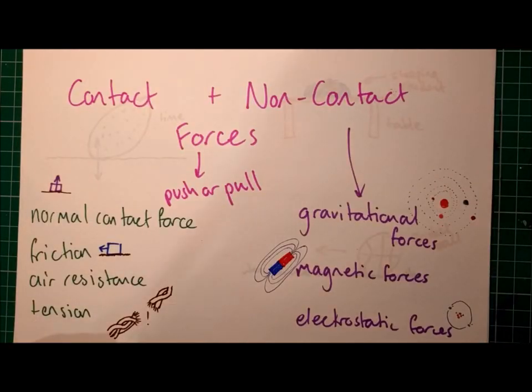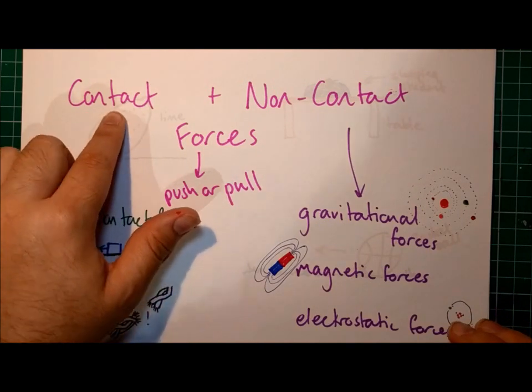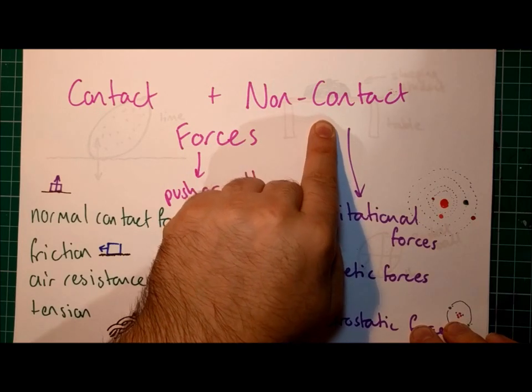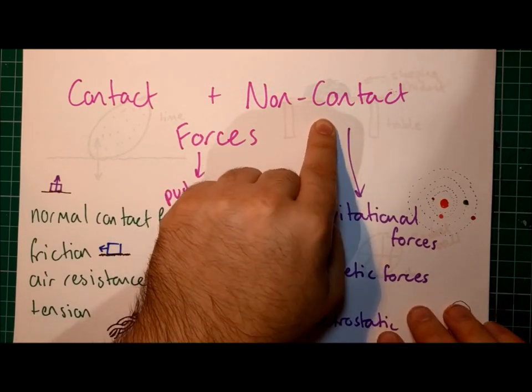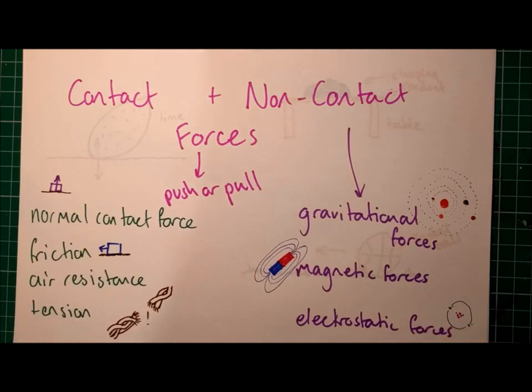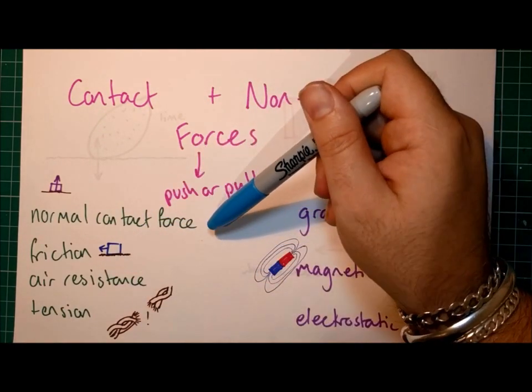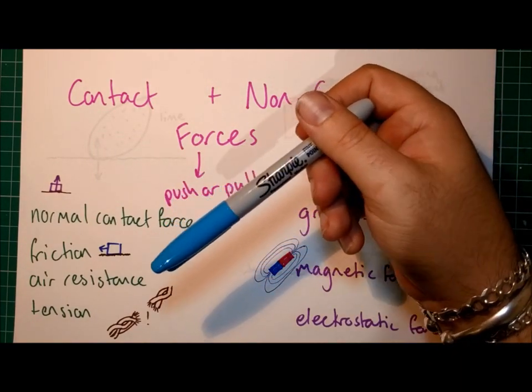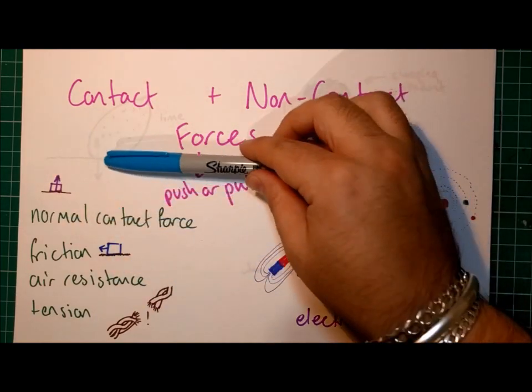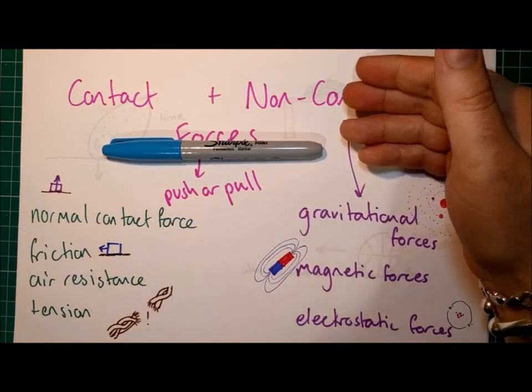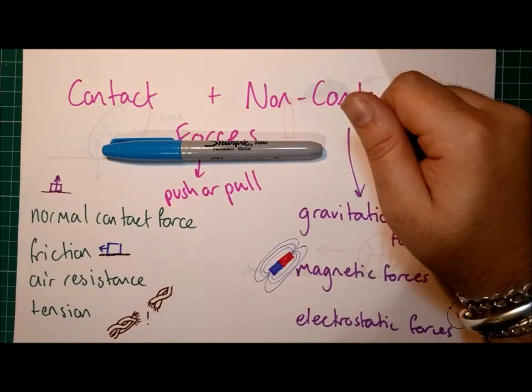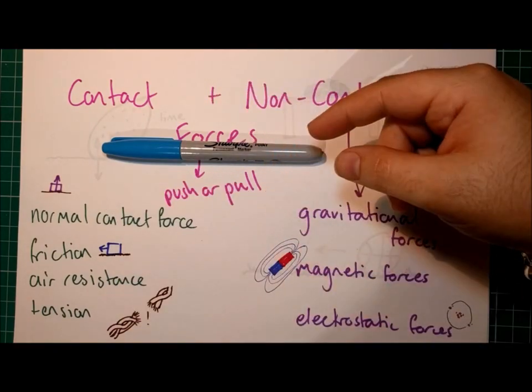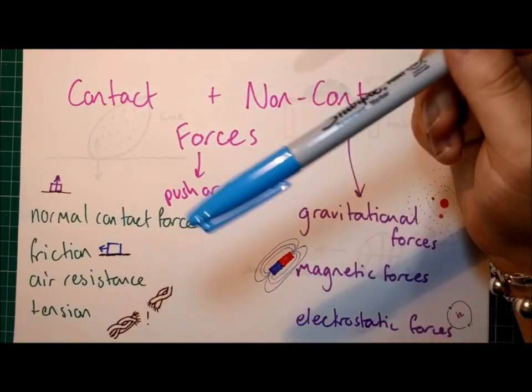All forces can be split up into two categories. Forces that require two objects to be touching before they act, and forces that do not require the two objects to be touching. So contact forces, a lot of these we're quite familiar with, are things like the normal contact force, which is simply the force that prevents two solid objects from sinking into one another.